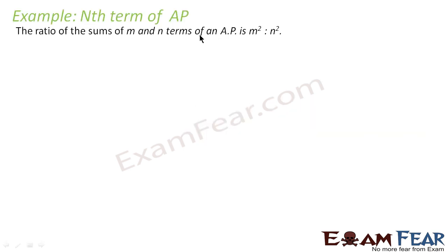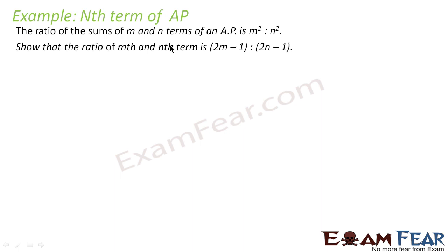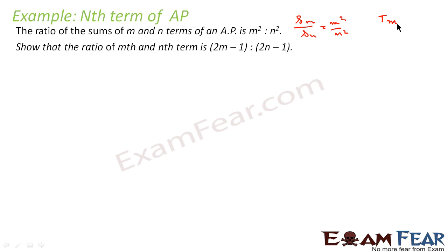We are given that the sum of m terms and n terms of an AP is m² by n². We have to show that the ratio of the mth term to the nth term is (2m − 1) by (2n − 1). That is, Sm by Sn equals m² by n², and we have to find Tm by Tn, which equals (2m − 1) by (2n − 1). We have to prove this.